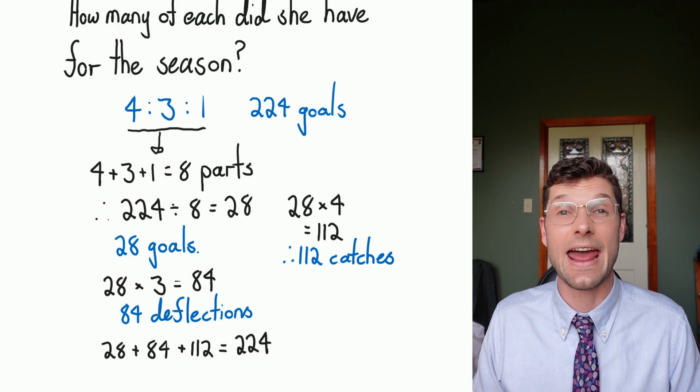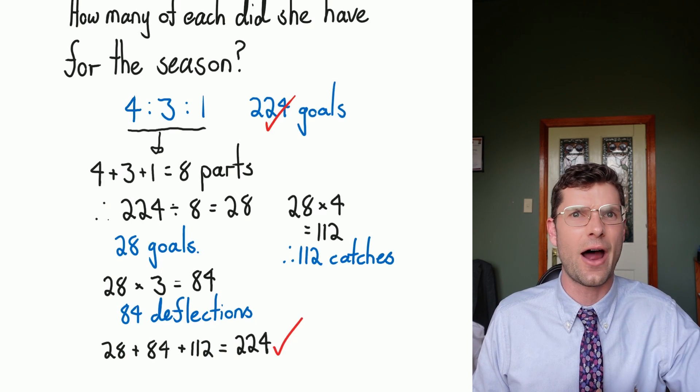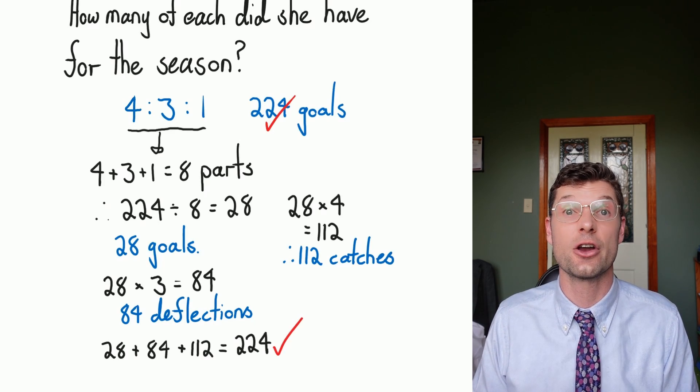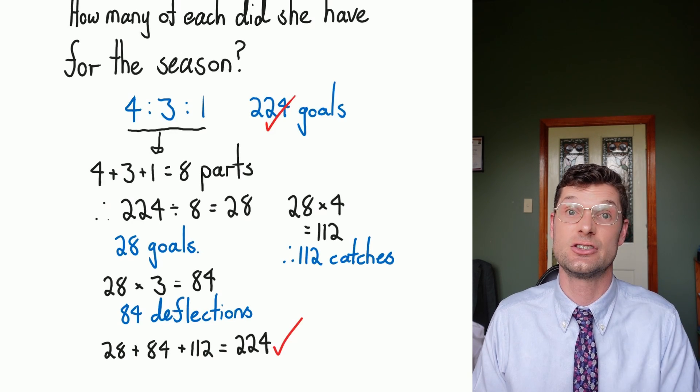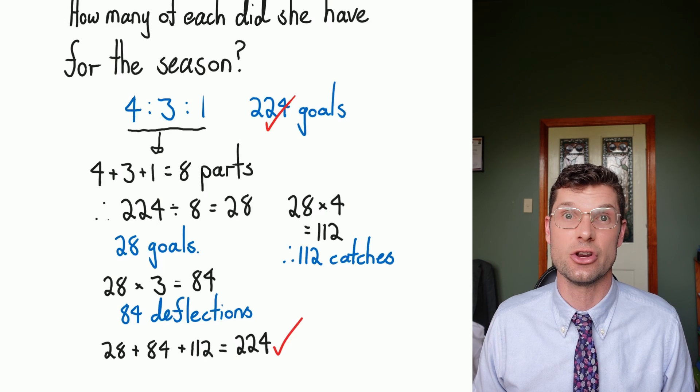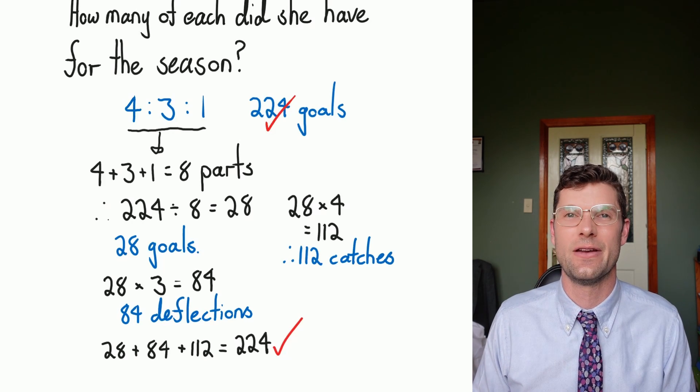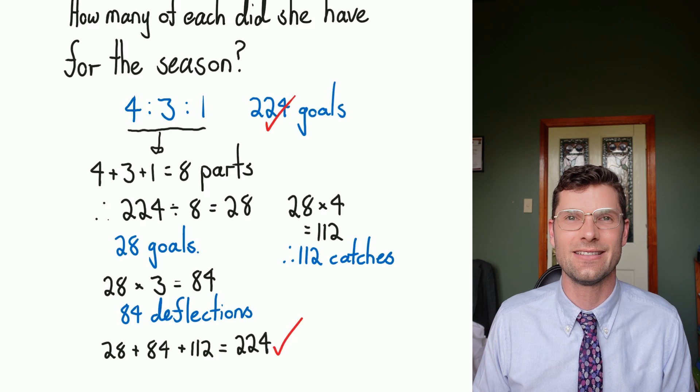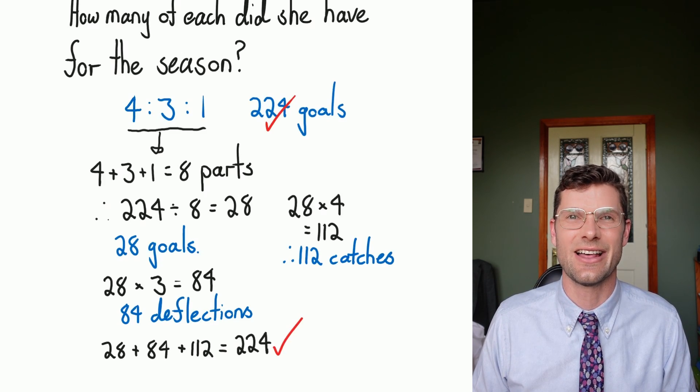So these questions can look a little bit overwhelming sometimes because there's colons, there's heaps of information, we're dividing things unevenly, but all we've gotta do is add up all the parts of the ratio, find the parts, divide the total by the number of parts to find one part, and then multiply to what you need to. Please always check your answer at the end with a little bit of addition. I guarantee it's worth the wait, but I think you're gonna find this lesson pretty easy. Thanks so much for watching, and I'll see you later.